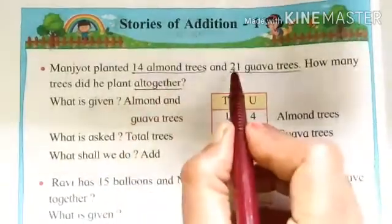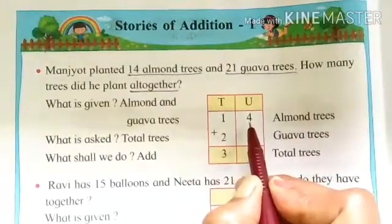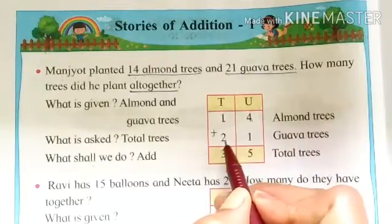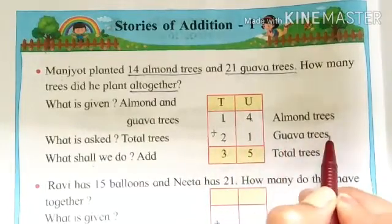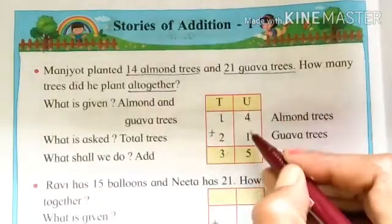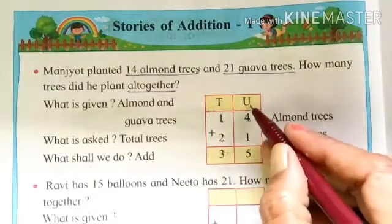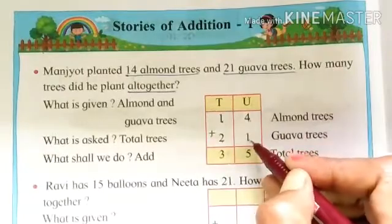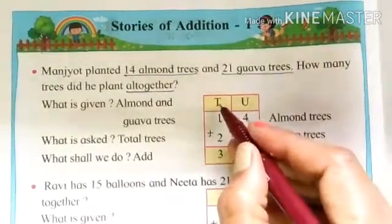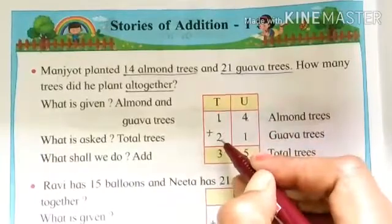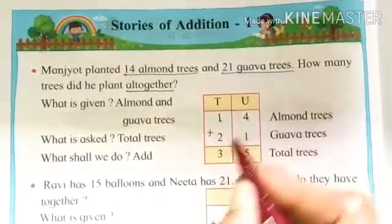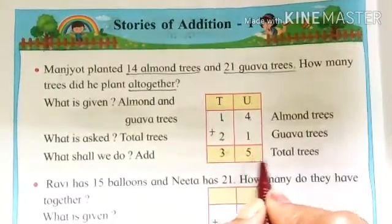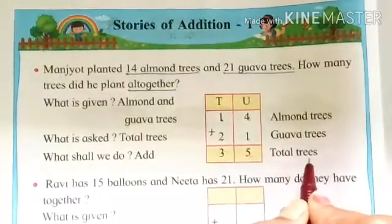Now these two numbers we have to write in the box. 14 almond trees plus 21 guava trees. Now we have to add that. First unit place, always start with the unit place. 4 plus 1, it is 5. Then tens place, 1 plus 2 equals 3. So 3 tens 5 units becomes 35. So this is the answer, 35 total trees.